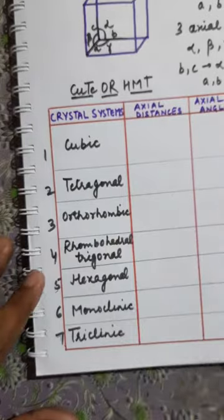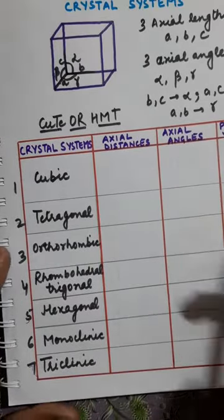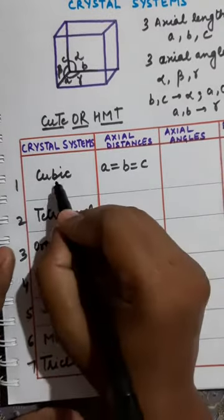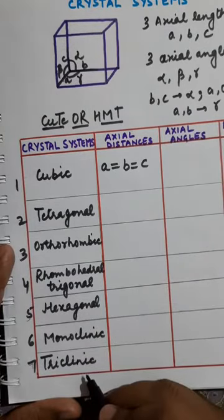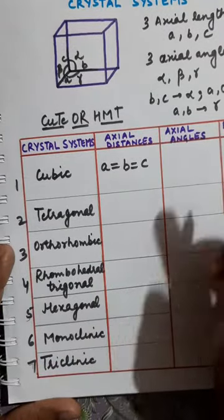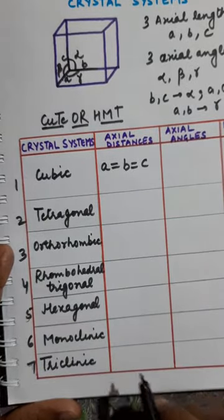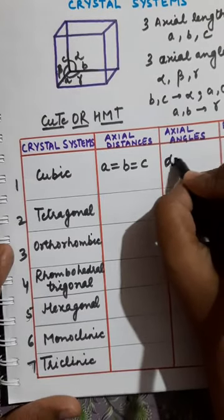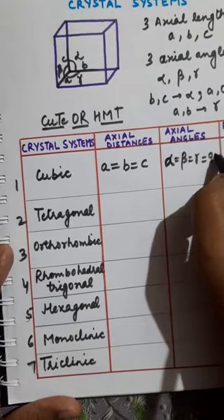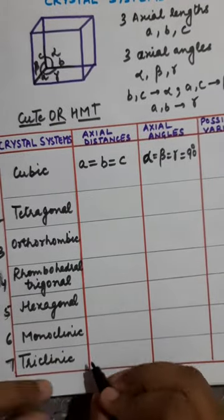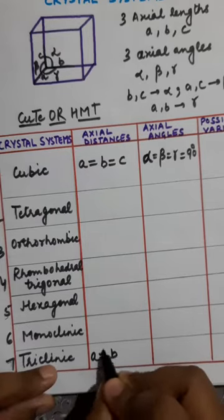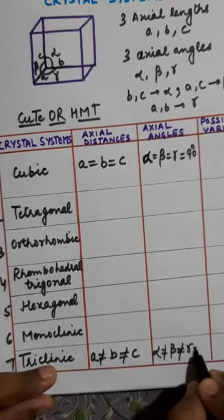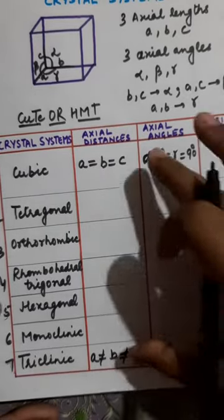Start writing the axial distances. Cubic is the most symmetrical system and triclinic is the most unsymmetrical. In cubic, all axial distances and axial angles are equal, with alpha = beta = gamma = 90 degrees. In triclinic, A ≠ B, B ≠ C, alpha ≠ beta, beta ≠ gamma, and none are equal to 90 degrees.